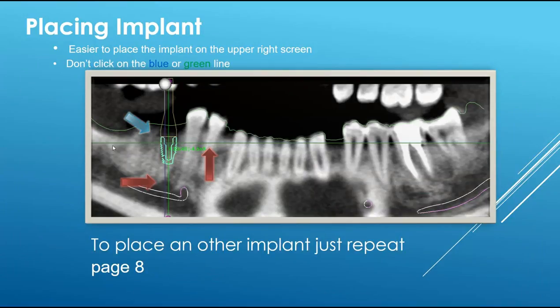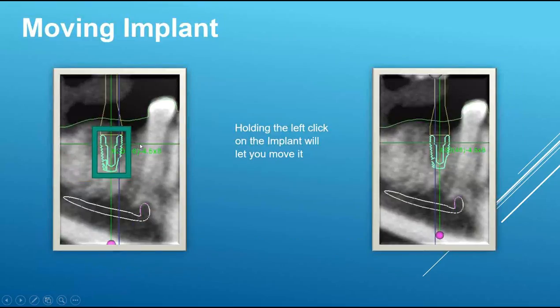It's very important that you don't click on the vertical or horizontal lines on the CT — think of those as the border lines of the 3D image box. If you click on the line, it will display the implant on the outside of the 3D box, so click next to the line. Once you've placed it, left-click and hold on the implant itself and you can drag it to where you want it to be.